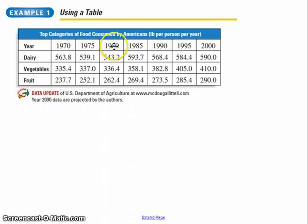So let's make sure that we've all got the same ideas in mind about what's being shown here. Clearly, everything's being organized by year, and the years change by five-year intervals. They jump by five years. And they're looking at amounts of dairy and vegetables and fruit. And this title kind of says it in a pretty nice fashion here, the top categories of food consumed by Americans.